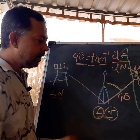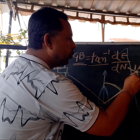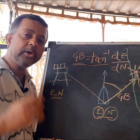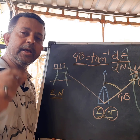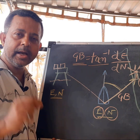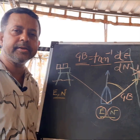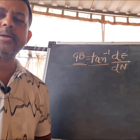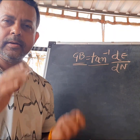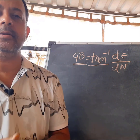Now you have measured the angle and you have found the grid bearing. To convert the grid bearing into a true bearing, you have to apply something called convergency. Convergency is the angle between the true north and the grid north.